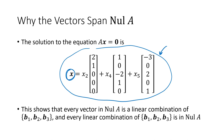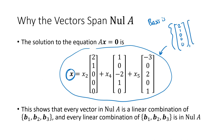To find a basis for the null space of a matrix, we just need to find the parametric form of the solution to Ax = 0. The vectors corresponding to the free variables in that parametric solution form the basis. In our example, the basis is the set of three vectors: (2, 1, 0, 0, 0), (1, 0, −2, 1, 0), and (−3, 0, 2, 0, 1). That set of three vectors is the basis for the null space of A.